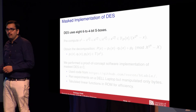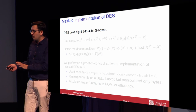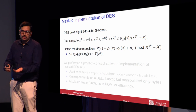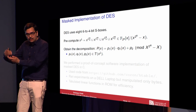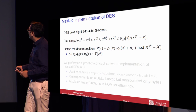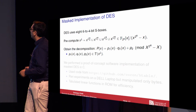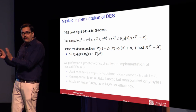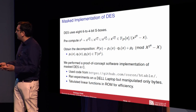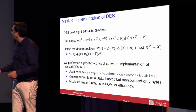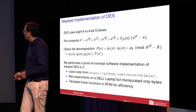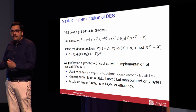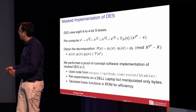We performed a software implementation of DES. Recall that DES uses eight 6-to-4-bit S-boxes. In the pre-computation step, the pre-computed set of monomials consists of the constant, the input X, X cubed and all its squares, and X power 7 and all its squares. We obtain a decomposition of the form P(X) = P1·Q1 + P2, where P1, Q1, and P2 have monomials only from this pre-computed set. Note that we are working over F2 power 8 and not F2 power 6. We performed a software implementation in C using code from previous implementations, ran the experiments on a laptop, manipulated only bytes, and tabulated the linear functions for efficiency — these functions can be stored in ROM.